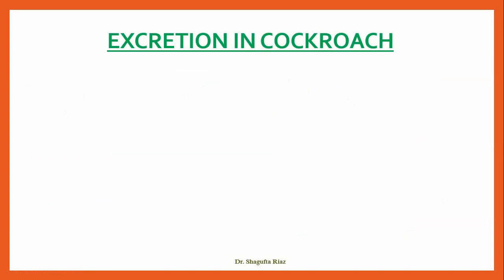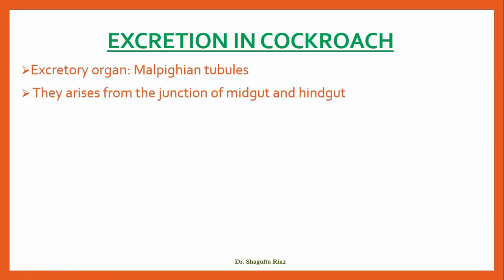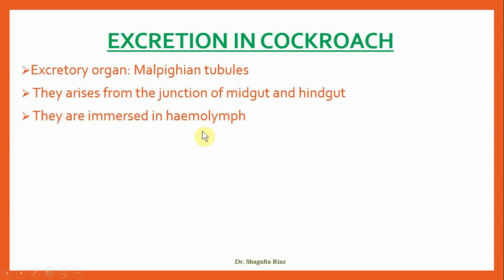Now excretion in cockroach. The excretory organs of the cockroach are called Malpighian tubules. They arise from the junction of the midgut and hindgut, which are parts of the alimentary canal of the cockroach. They are immersed in hemolymph. Arthropods and insects have hemolymph instead of blood because their blood is mixed with the lymph or interstitial fluid of the body. They don't have a proper blood circulatory system, so their blood is distributed in the lymphatic area as well, and is therefore called hemolymph.